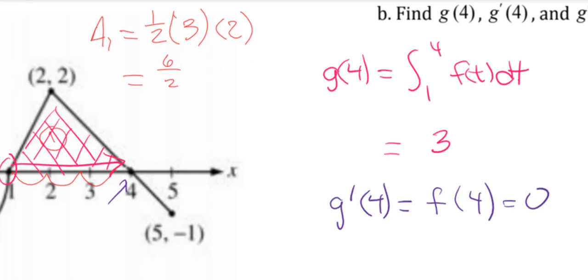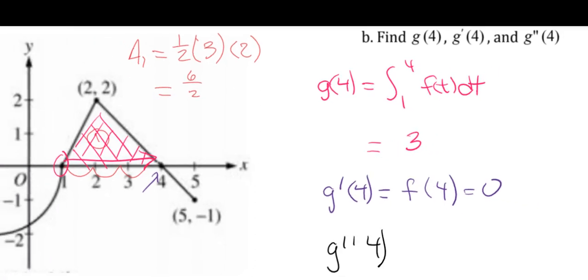The third part, g double prime of 4, that is going to give us the slope. So g double prime of 4, what we want to do is determine the slope where x is 4. If I look here along this line, let's take a look at that, because that's the line that contains the x value of 4. And that's a straight line. So I know that the slope is the same anywhere on that line.